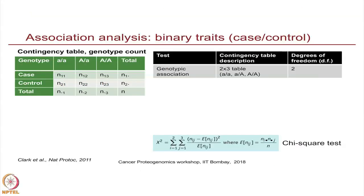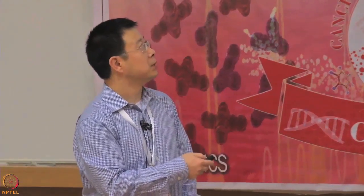Basically, you look at your individuals and put the numbers into a 2-by-3 table — these are the cases with the small-a small-a genotype. You can fill in this table after you know all the genotypes and phenotypes for all individuals. Then we can use a chi-square test to test the association between the binary phenotype and the genotype. This is the formula showing how the chi-square test is done.